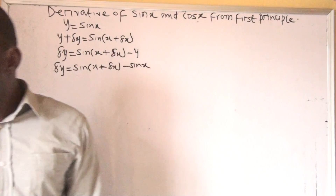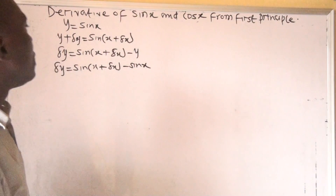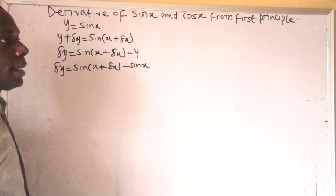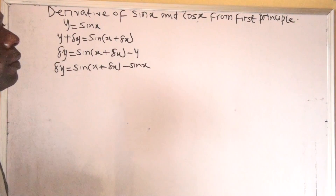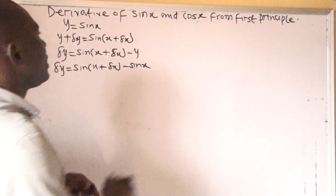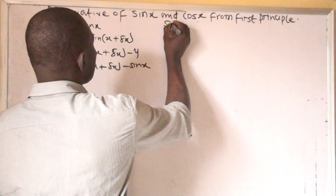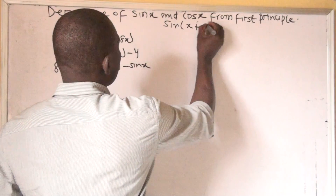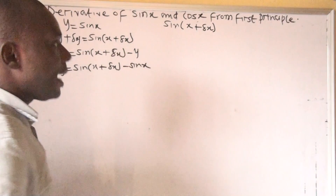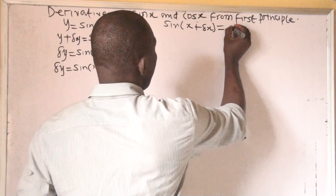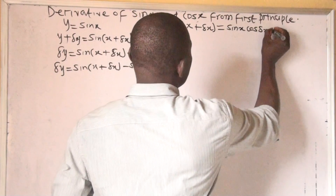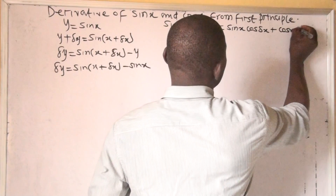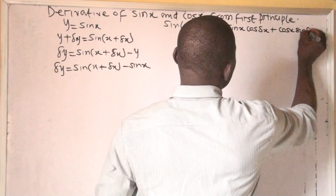We need to establish that sin(x plus delta x) — we can't just expand it directly. We will use the sum formula for trigonometry to write an expression for sin(x plus delta x), which equals sin x cos(delta x) plus cos x sin(delta x).